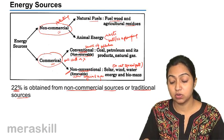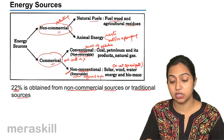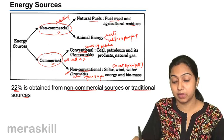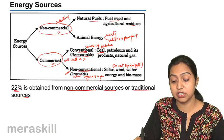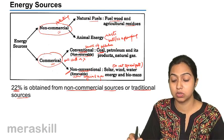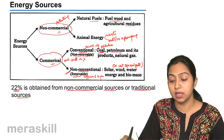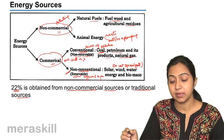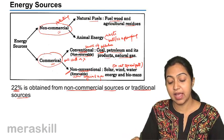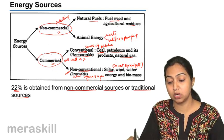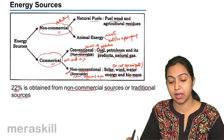The conventional sources of energy are coal, which is a very important source, petroleum, natural gas, etc. And the non-conventional sources are solar, wind, water energy, and biomass.